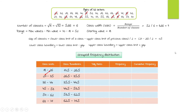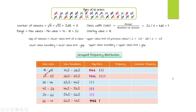Doing the tally marks: in the range 18–26 we have 8 observations. In 27–35 we have 9 observations. In 36–44 we have 3 observations. In 45–53 another 3. In 54–62 another 3. In 63–71 we have 6 observations. The corresponding frequencies are 8, 9, 3, 3, 3, and 6.